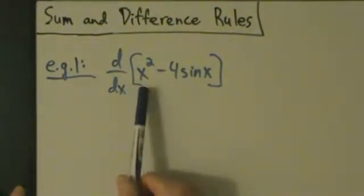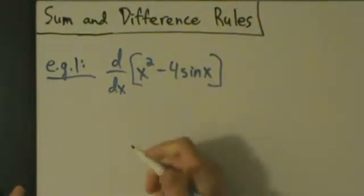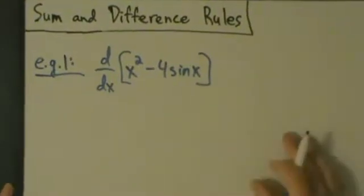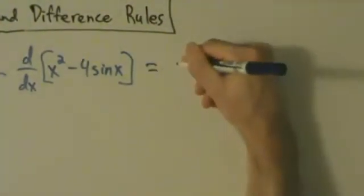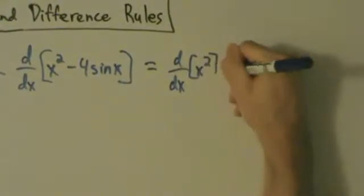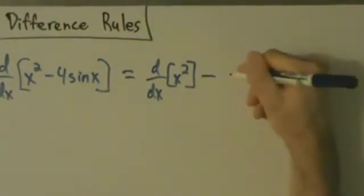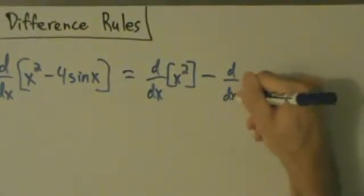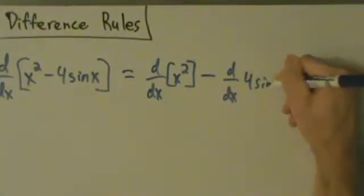We have a derivative of this minus this. The difference rule tells us that's equal to d/dx of the first thing, which is x², minus d/dx of the second thing, which is 4 sine x.